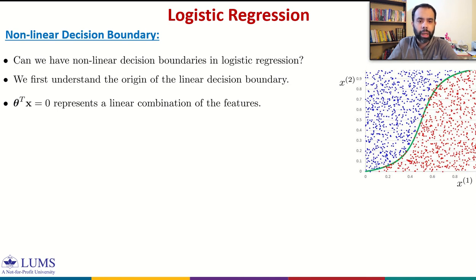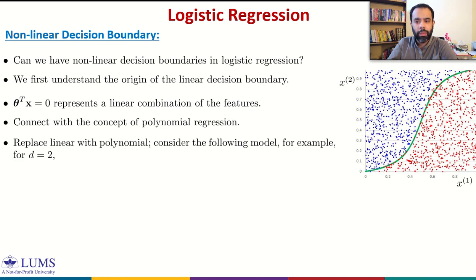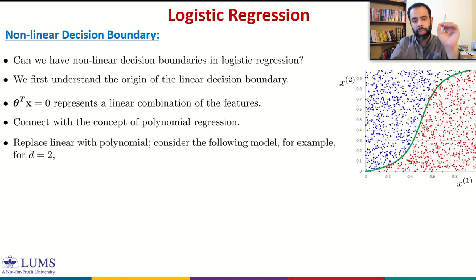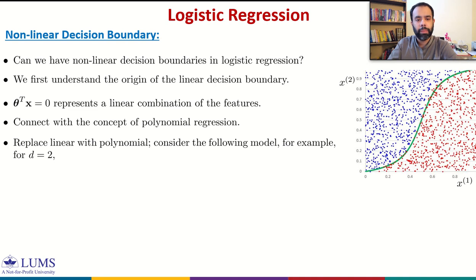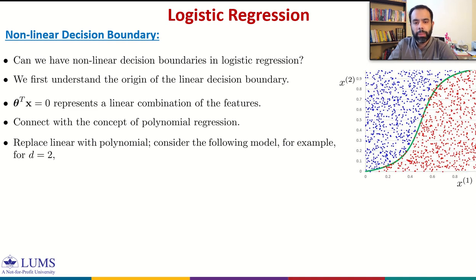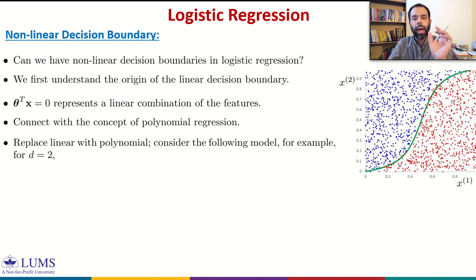If we want a non-linear boundary, we connect with the concept of polynomial regression. When we defined polynomial regression, we formulated it as linear regression in the parameters but could model non-linear behavior between output and input. If we replace what is inside the sigmoid with a polynomial instead of a linear function, we may obtain non-linear boundaries.